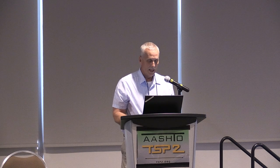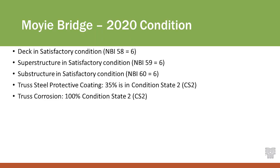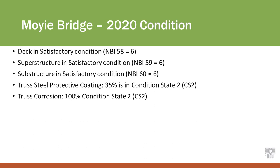Based on the 2020 desktop review we conducted, the bridge deck was found to be in satisfactory condition, corresponding to an NBI rating of six, as was the superstructure and substructure. Diving a bit deeper on the protective coating for the truss: what was reported was a condition state two for 35% of the coating — in fair condition. This indicates the coating system is at the end of its useful life. At the time, it had about 55 years of life, which is excellent for painted steel. Some truss corrosion was beginning to develop.